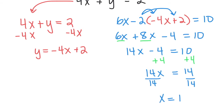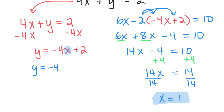I have one number, but every time we have a system we need a coordinate point — x comma y — so I need to solve for y as well. The good thing is I already have an equation set up as y equals from the first step. So I take x equals 1 and plug it in where the x is.